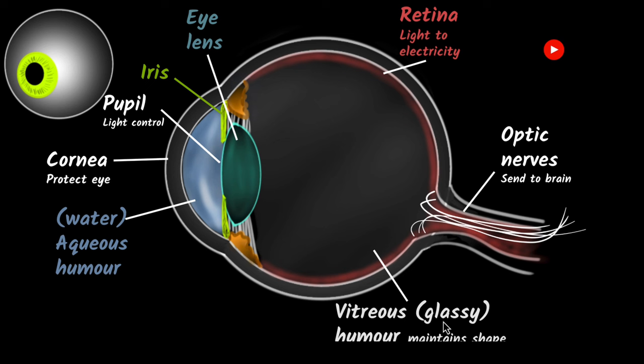Vitreous stands for glassy. It's transparent. It needs to be transparent. That's why it's called vitreous humor. And its main job is to maintain the shape of the eye.